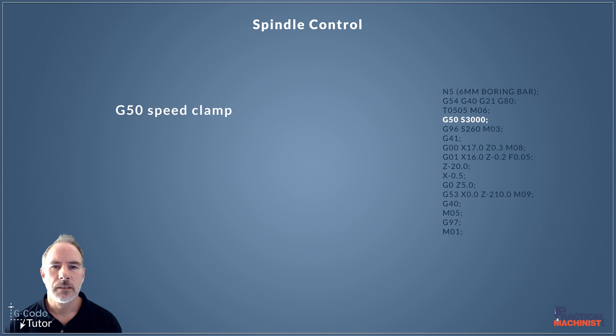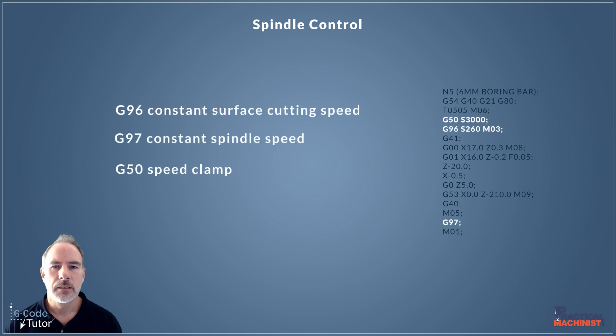What we do is add a speed clamp. The G50 speed clamp stops the spindle from exceeding a certain speed — it's like a speed limit for the spindle. By adding G50 and then an S value, say 3000, we know that spindle will never go above 3000 RPM no matter how small the diameter gets. Once the spindle reaches that maximum RPM it won't go any further. So when programming with G96, always remember to add a speed clamp with G50.